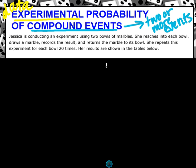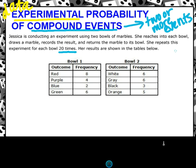and we have a situation. It says Jessica is conducting an experiment using two bowls of marbles. She reaches into each bowl, draws a marble, records the results, and returns the marble to its bowl. She repeats the experiment for each bowl 20 times. That's probably going to be important. Her results are shown in the table below. So she's actually done this experiment, and you can see that here.